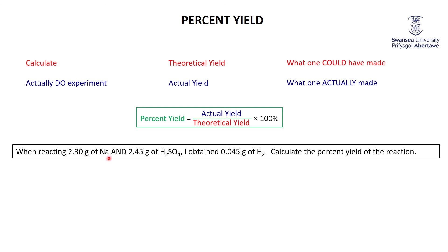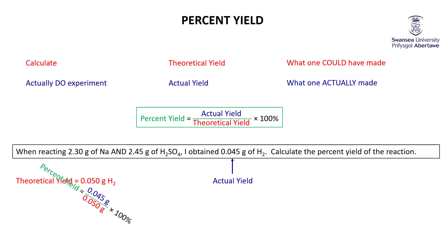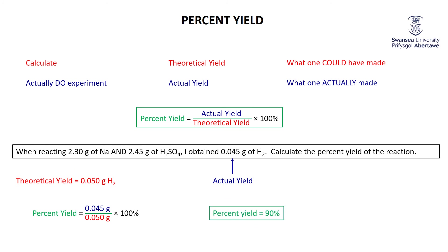Going back to our experiment: I reacted 2.3 grams of Na and 2.45 grams of H2SO4 and obtained 0.045 grams of H2. The theoretical yield is 0.05 grams (limited by H2SO4). So the percent yield is 0.045 divided by 0.05 times 100, which equals 90%.